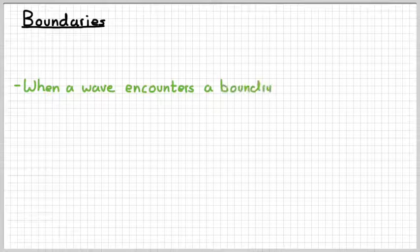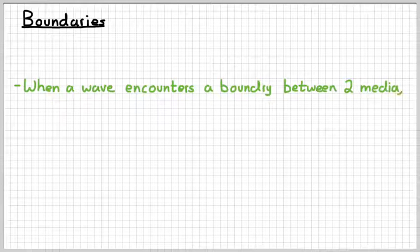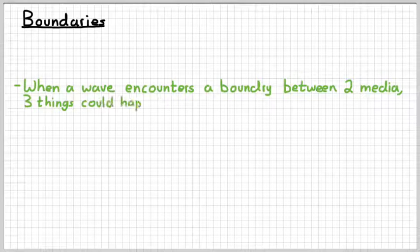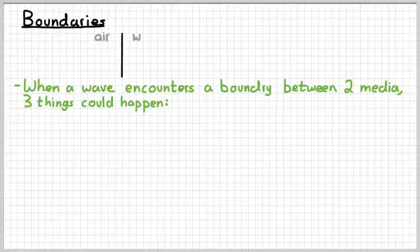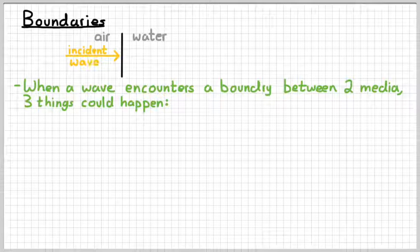When I say when a wave encounters a boundary, what that means is that a wave encounters the boundary between two different media, like, for example, going from air into water. So when that occurs, we might call such a wave an incident wave. There are three things that are possible.